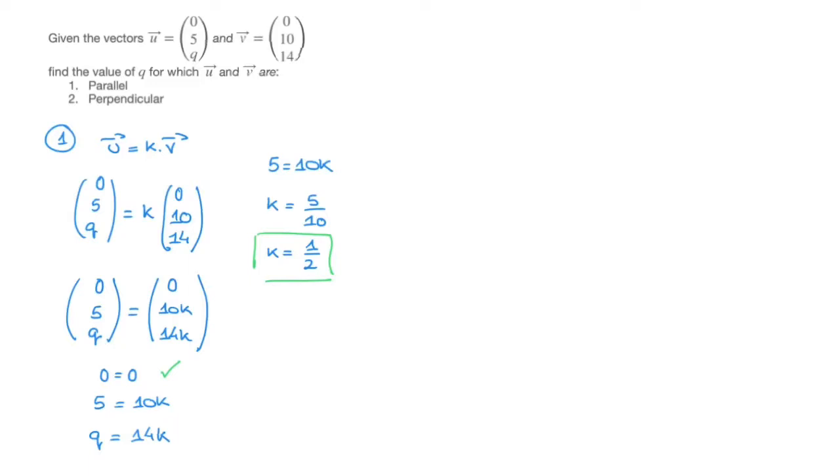So if k equals to 1 over 2, this second equation turns into 5 equals to 10 times 1 over 2, which is 5. In other words, it makes that second equation true as well. And finally, now that we know what k is, we can figure out what q is. Indeed, copying this third equation, that's q equals to 14k. But since k is 1 over 2, that becomes 14 times 1 over 2. That leads us to q equals to 14 over 2. Finally, q is equal to 7. And that's the answer. For the vectors u and v to be parallel, q has to equal to 7.